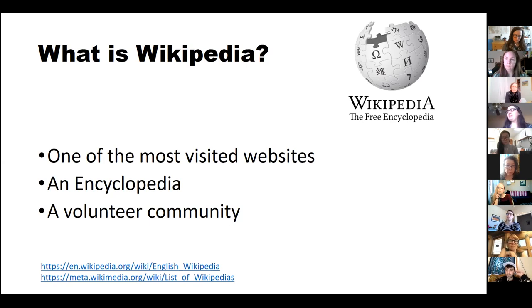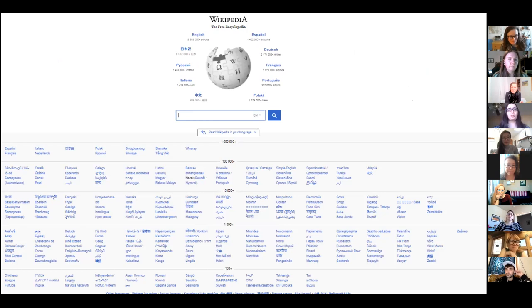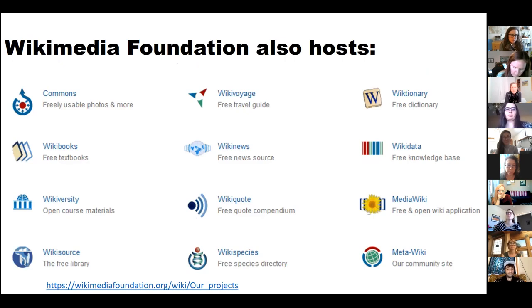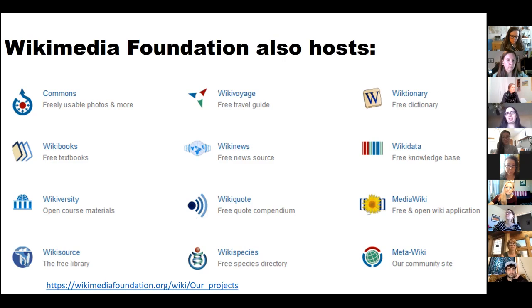Wikipedia exists in about 300 different languages, so it's a global phenomenon, not just something in the United States. The Wikimedia Foundation, the nonprofit that runs Wikipedia, also runs a variety of other free information projects — for instance, Wikimedia Commons, which has photos and media, Wikidata, which is a structured knowledge base, and various projects for species, sources, travel, and dictionaries. People often work across these different projects and there are links between them.